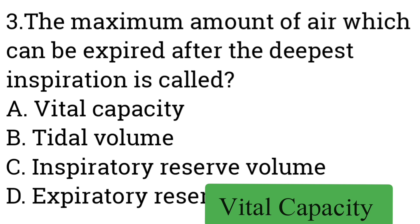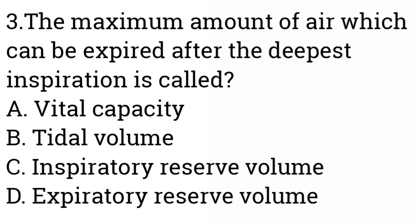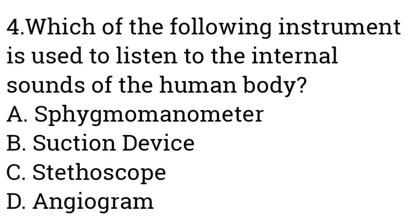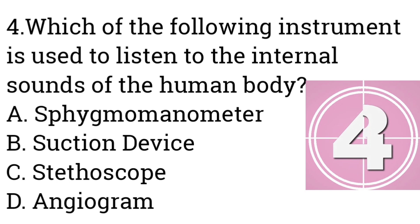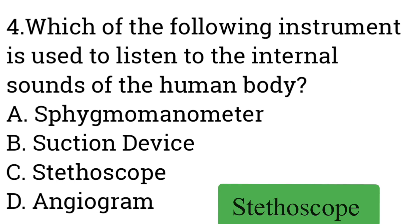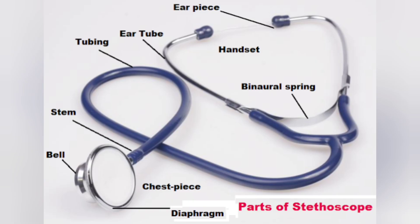Question number four: Which of the following instruments is used to listen to the internal sounds of the human body? Option A: Sphygmomanometer, B: Suction device, C: Stethoscope, D: Angiogram. Answer is Stethoscope. A stethoscope is the medical device primarily used to listen to internal body sounds generated by the heart, lungs, abdomen, and intestinal tract.